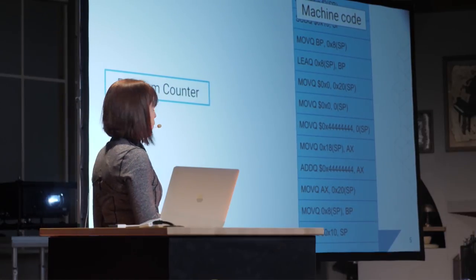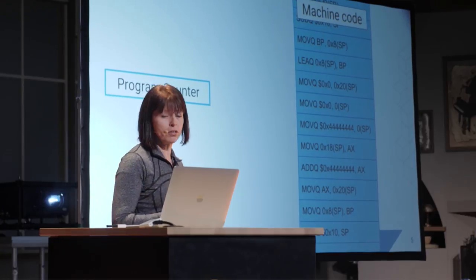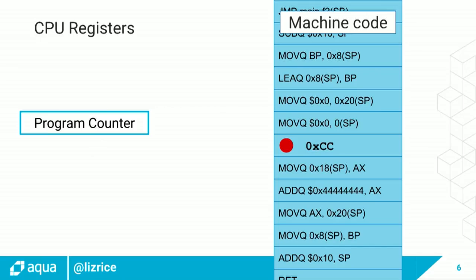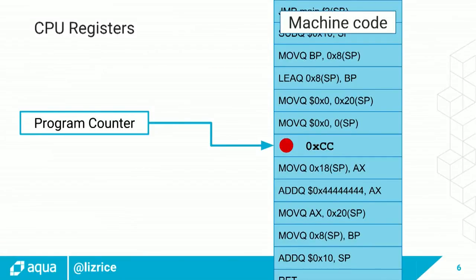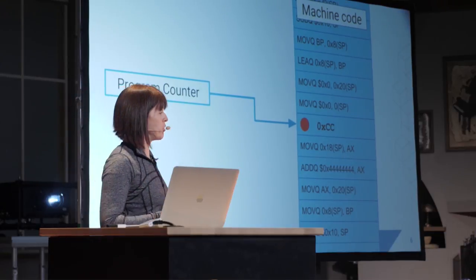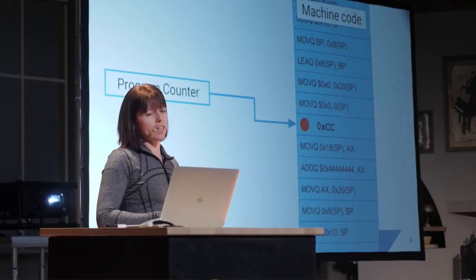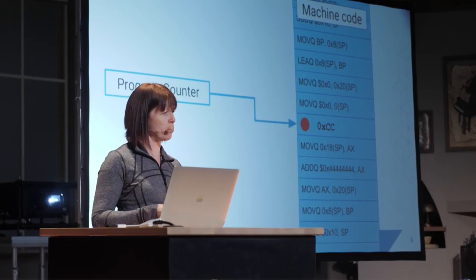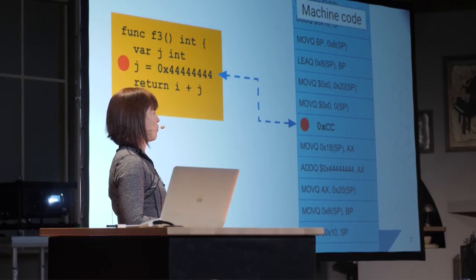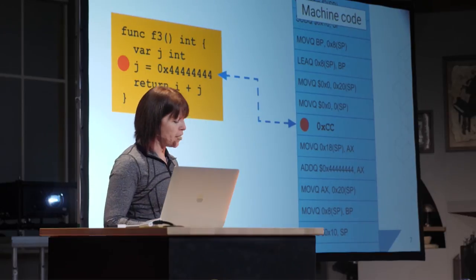If we want to set a breakpoint and we want the process to stop, we replace the first byte of the instruction that we want to stop at with a particular code. It happens to be hex CC, also known as interrupt three. When execution hits that particular code, execution stops and it issues a breakpoint trap to the debugging process. But we had to figure out which machine code instruction to put the breakpoint at, and as humans that's not much good to us — we want to put the breakpoint in our source code. So we need some mechanism for mapping between source code instructions and the place in machine code where they map to.